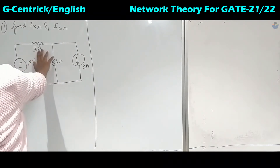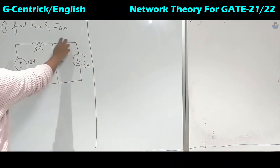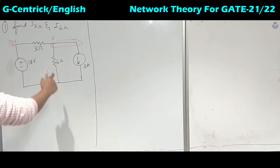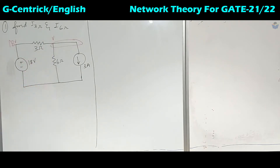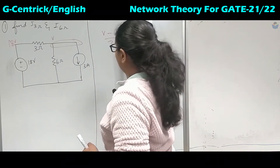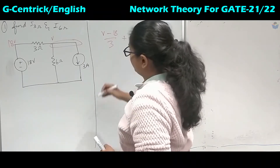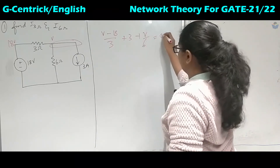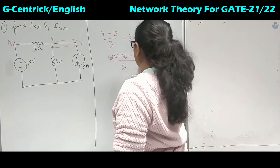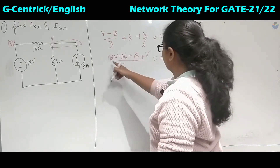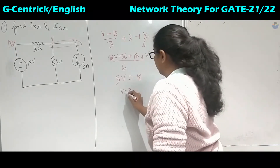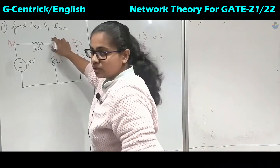We need to find the current in the 3 Ω and 6 Ω resistors. The node voltage V is the same across both. We have 18 V on one side. Applying KCL at the node: (V − 18) / 3 − 3 + V / 6 = 0. Taking 6 as the LCM: 2V − 36 + 18 + V = 0, giving 3V = 18, so V = 6 volts.